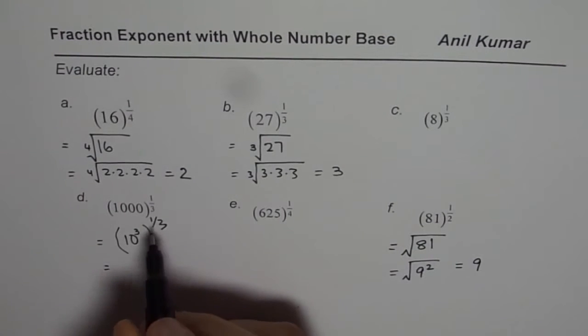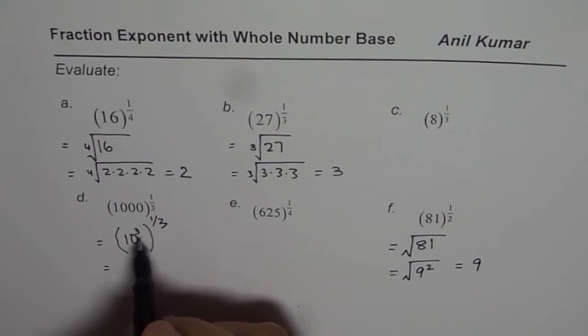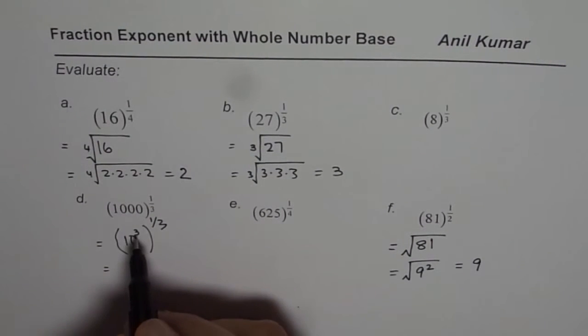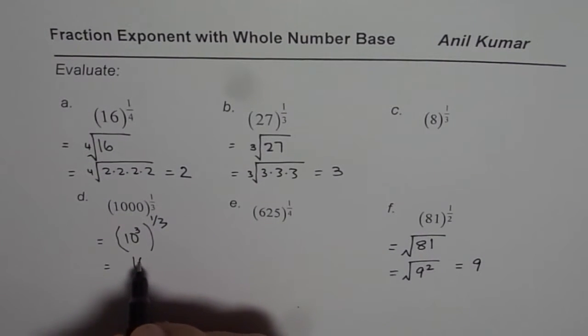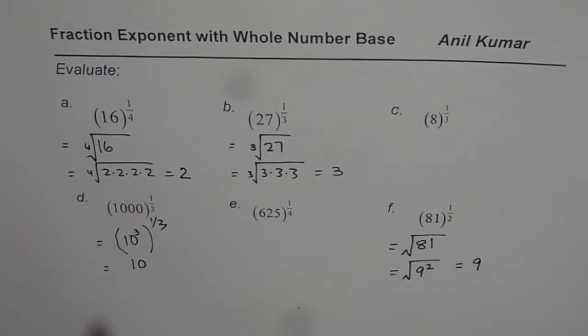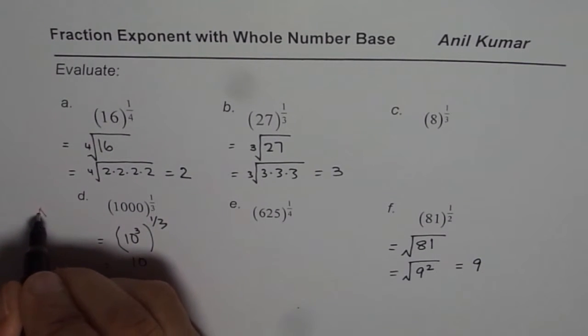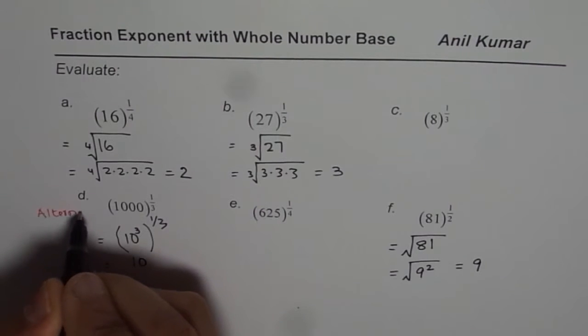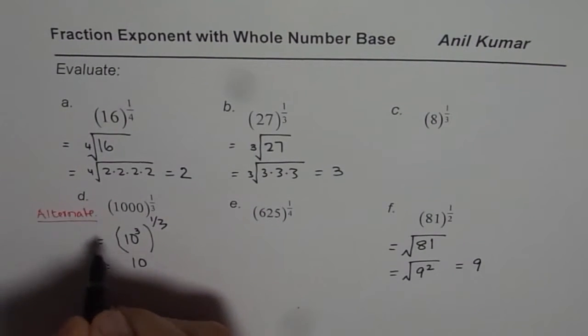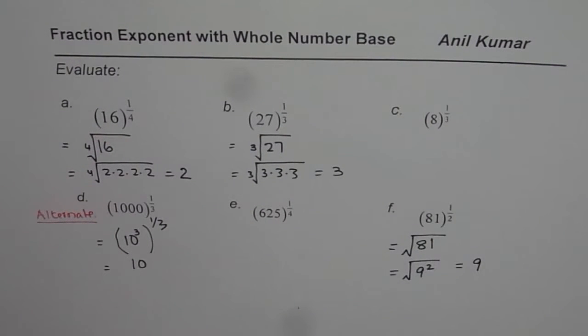Now, applying the rules of exponents, if you multiply them, what do you get? You get 3 times 1 over 3. So, 3 times 1 over 3 is 1. So, you get 10 as your solution. So, that is an alternate method. So, this is alternate solution. You can adopt this method also. It helps.